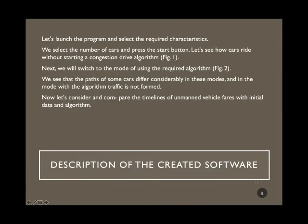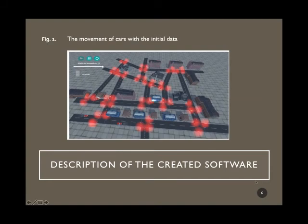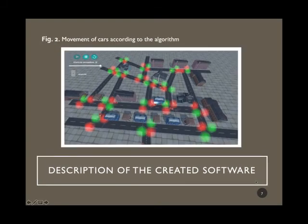Let's launch the program and select the required characteristics. We select the number of cars and press the start button. Let's see how cars drive without the congestion-avoidance algorithm. Next, we will switch to the mode using the required algorithm. We see that the paths of some cars differ considerably between these modes, and in the mode with the algorithm, traffic congestion is not formed.